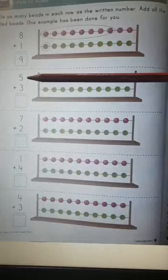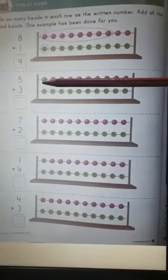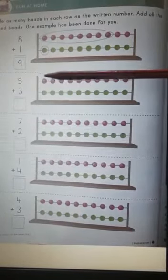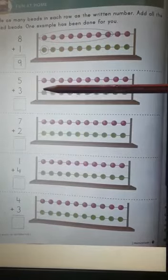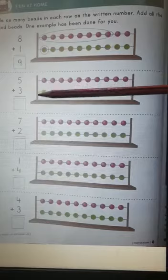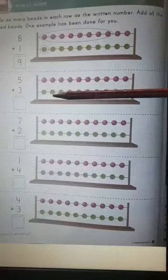Let's do the next one. Which number is this? 5. So what I will do? I will circle 5 beads. I will circle 5 beads. Now 3. So I will circle only 3 beads.